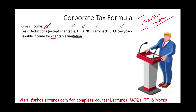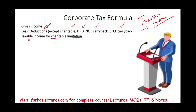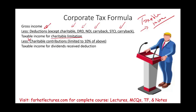Remember, we have not yet deducted the charitable contribution because we first have to compute this taxable income. Then, based on this income, we can take 10% of it as the charitable contribution deduction — we are limited up to 10%, assuming we pay that amount. That gives us taxable income for the dividend received deduction.